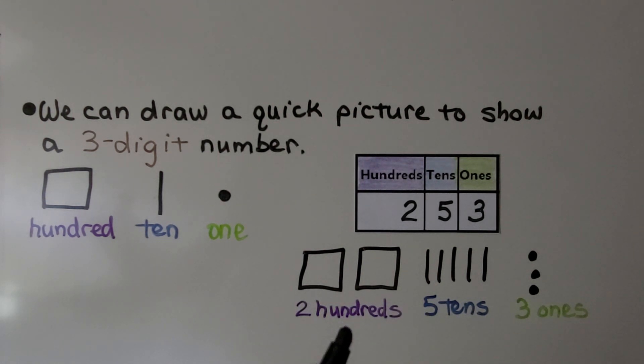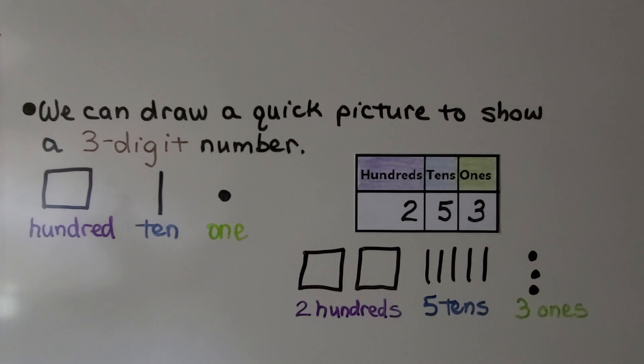We have 253 — that's two hundreds, five tens, three ones. We make two squares, five lines, and three dots.